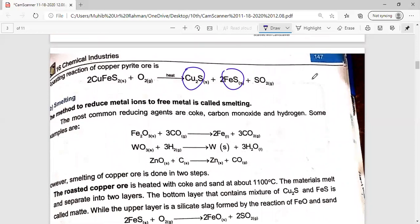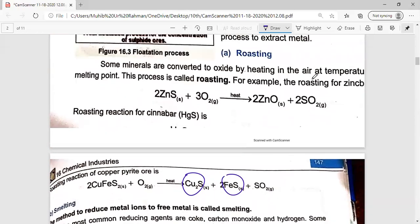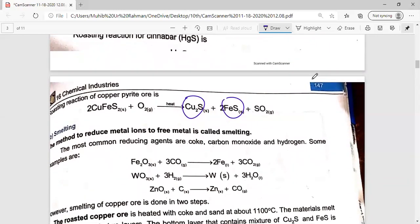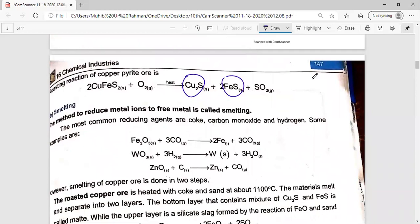We reduce the metal ions. We remove oxygen from the oxide. For example, sulfur or zinc oxide. What do we do? We remove it. We reduce it and convert it in free metal. So, the method in which reduction of ore occurs into free metal, we reduce the metal ions. It is called smelting.